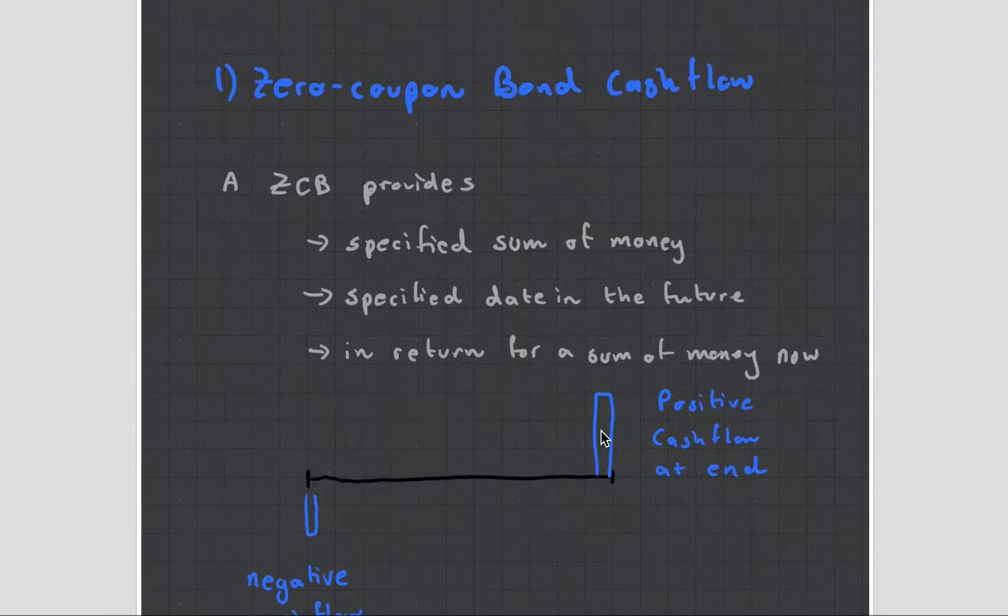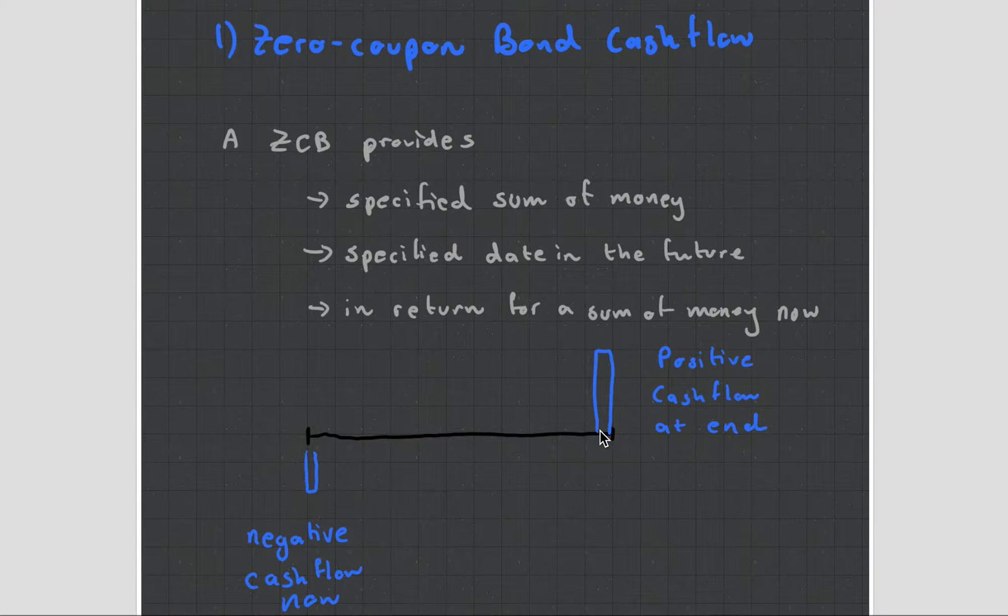Let's start off with something known as a zero coupon bond. This is very simplistic. It's the very core or base unit of the chapter. What a zero coupon bond is, is I pay some money now and I get some money later. In more actuarial terms, you have a negative cash flow at the beginning and you have a positive cash flow at the end.